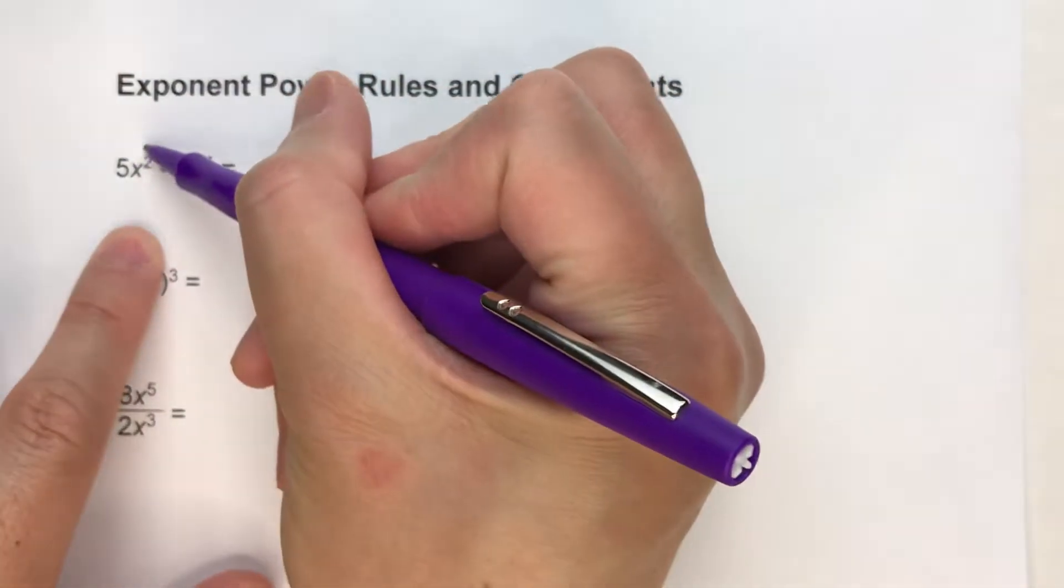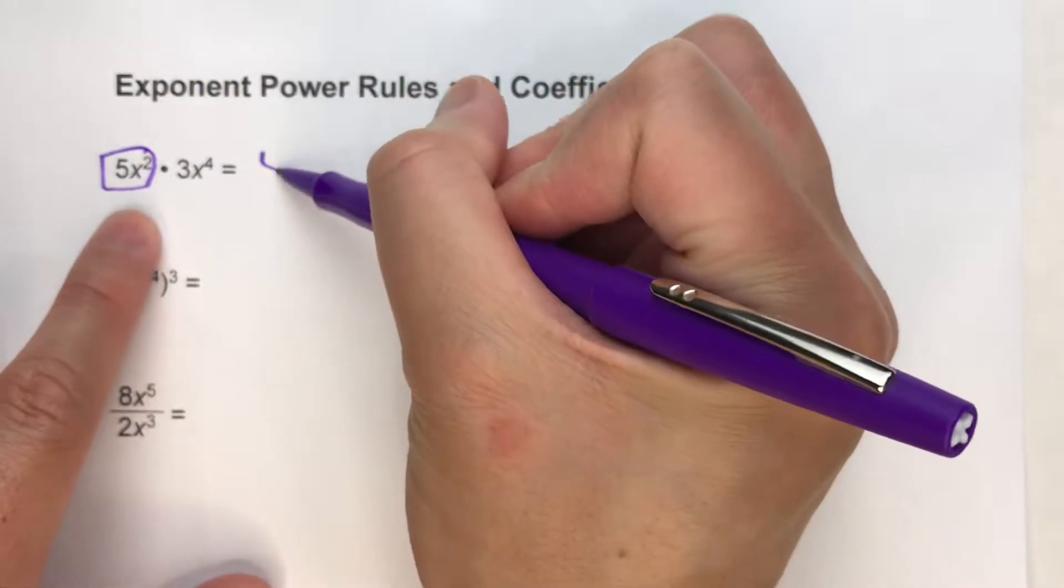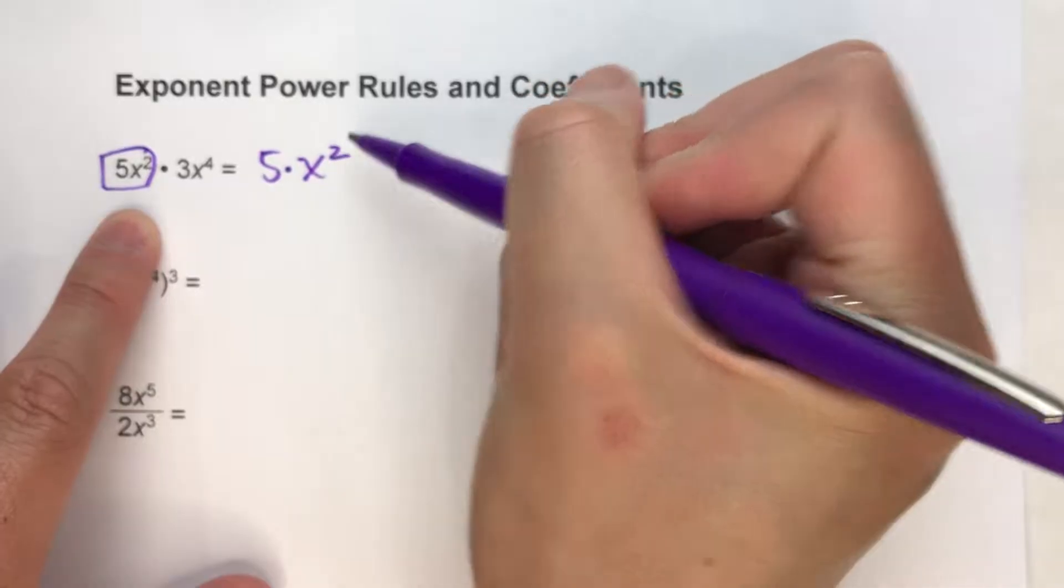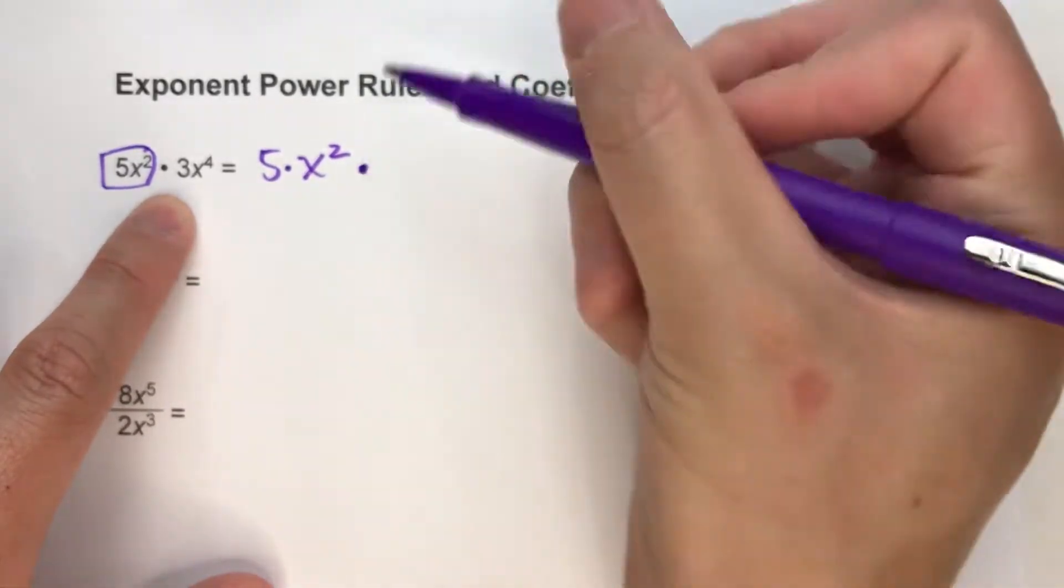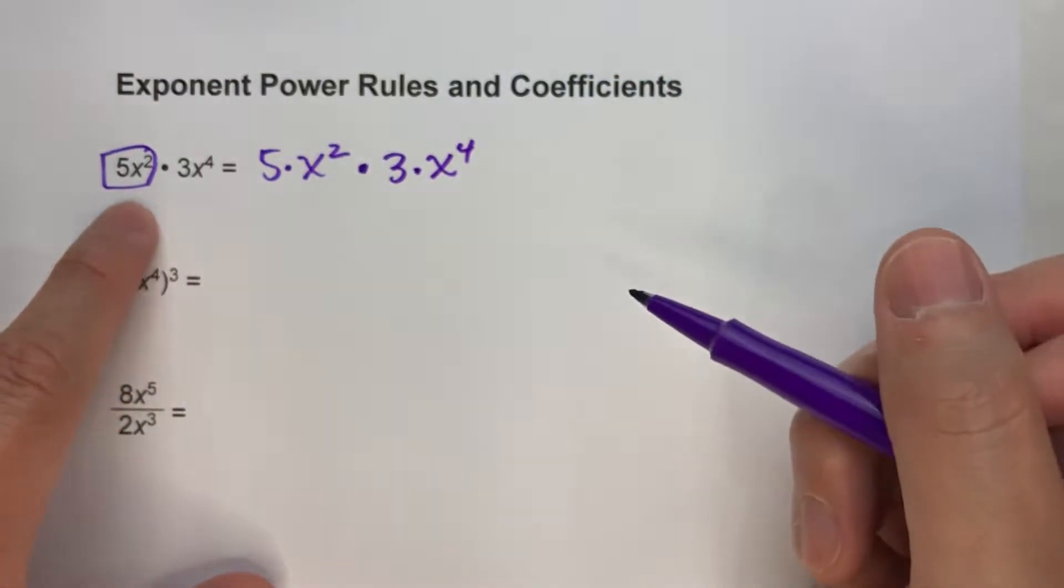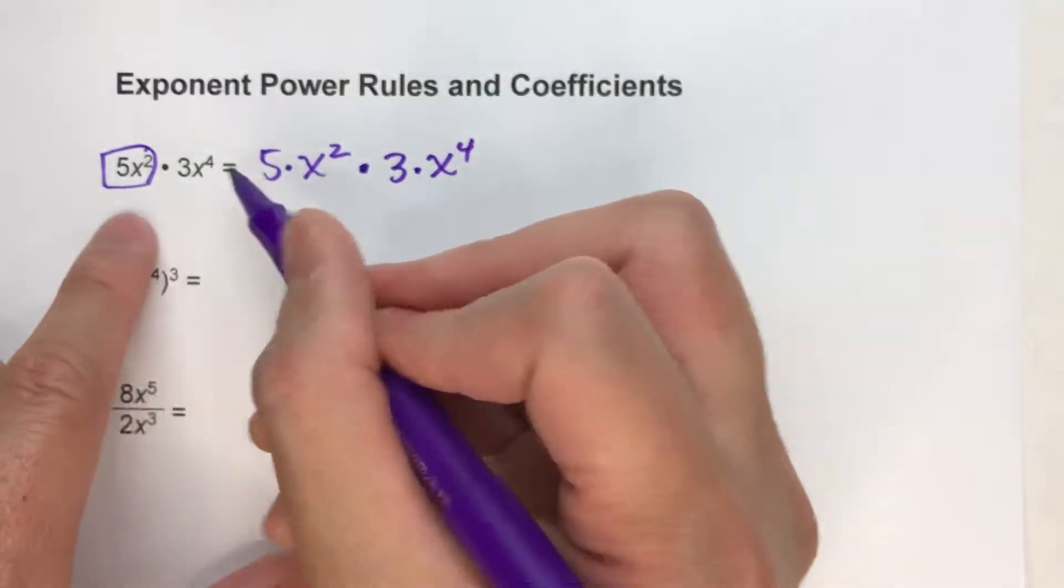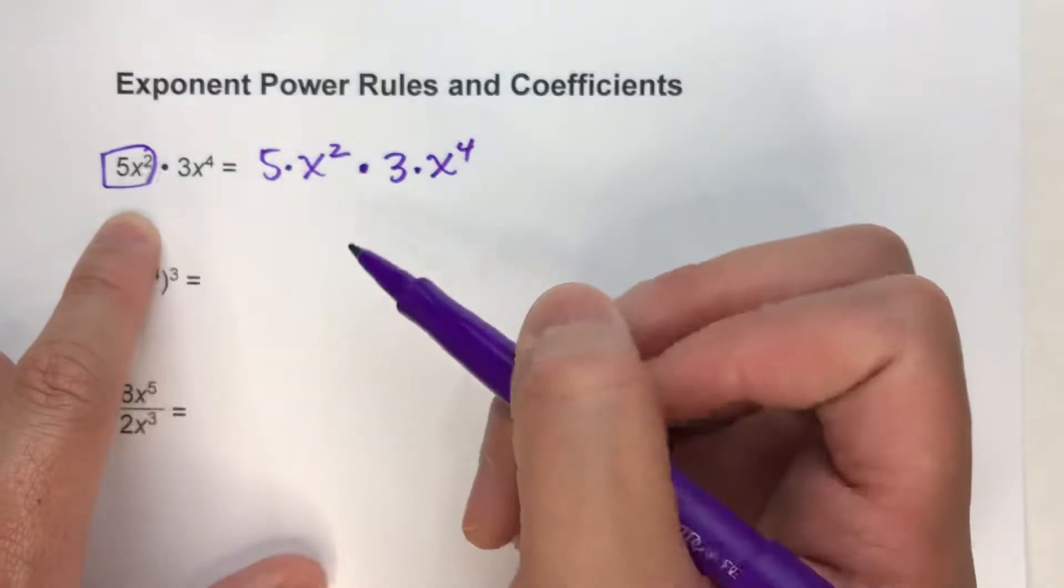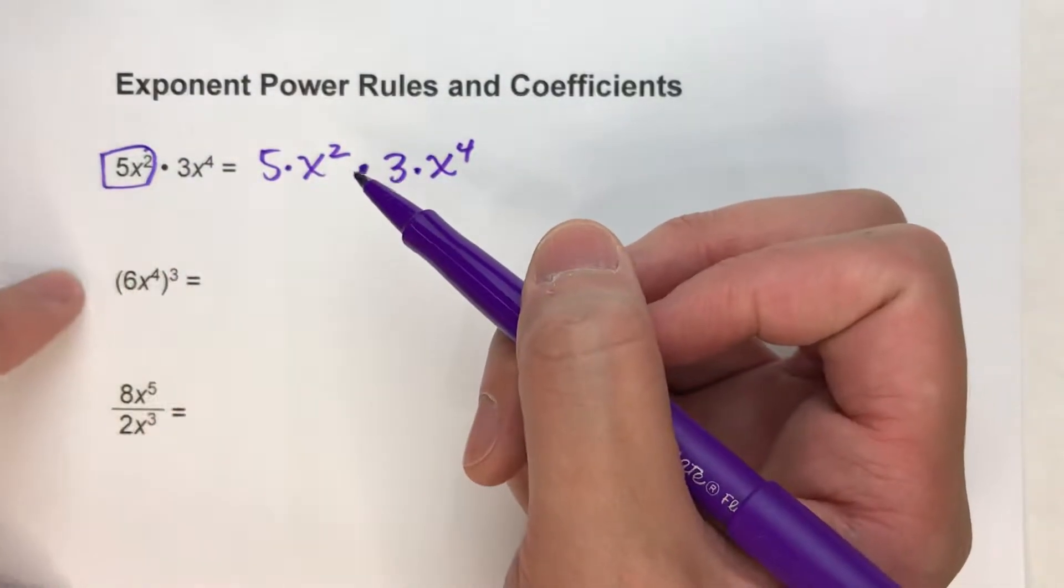So really, what this really means here is that 5 times x squared is being multiplied by 3 times x to the fourth. That's really what that means, but we usually don't put the dot there. We just put the 5 next to the x squared to show that they're being multiplied.